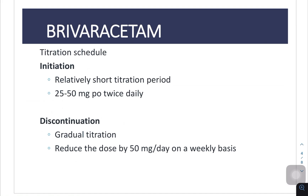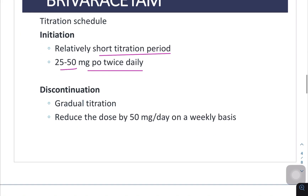What is the titration schedule? Initiation should be with a relatively short titration period: 25 to 50 mg orally twice daily. Discontinuation should be gradual — reduce the dose by 50 mg per day on a weekly basis.